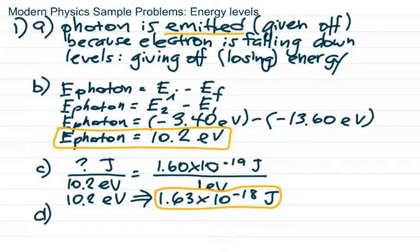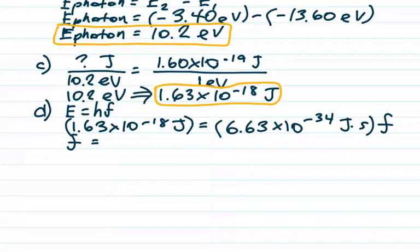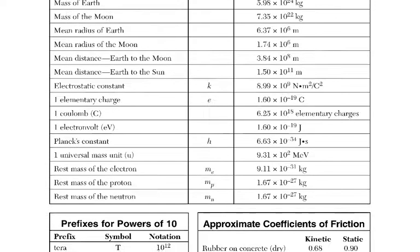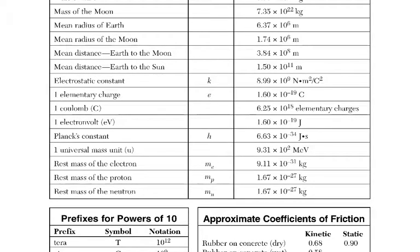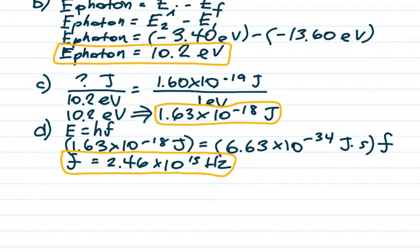Part 1D: solve for the frequency using E equals hf, which is on page five of the reference table. Planck's constant h equals 6.63 times 10 to the negative 34 joule-seconds — that's also on page one of the reference table. Dividing our energy by Planck's constant gives us 2.46 times 10 to the 15 hertz.